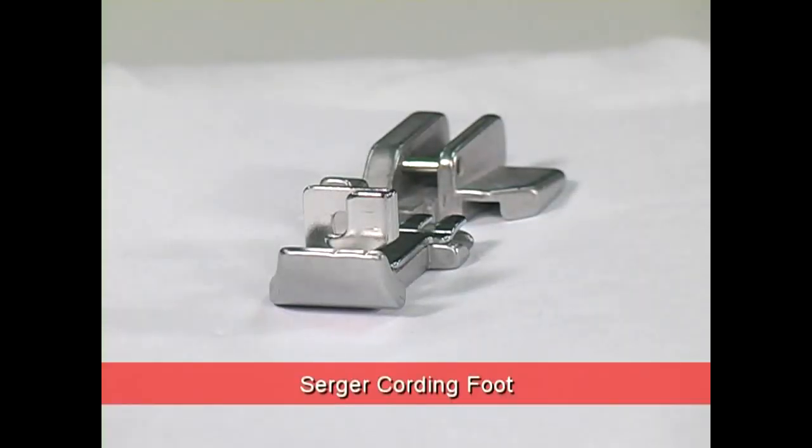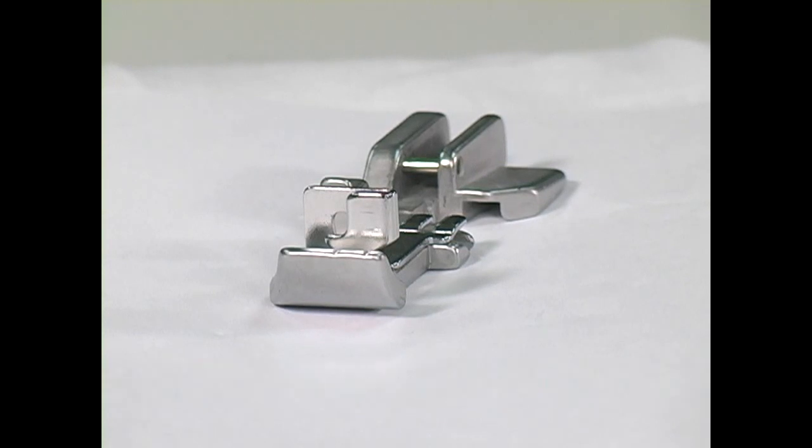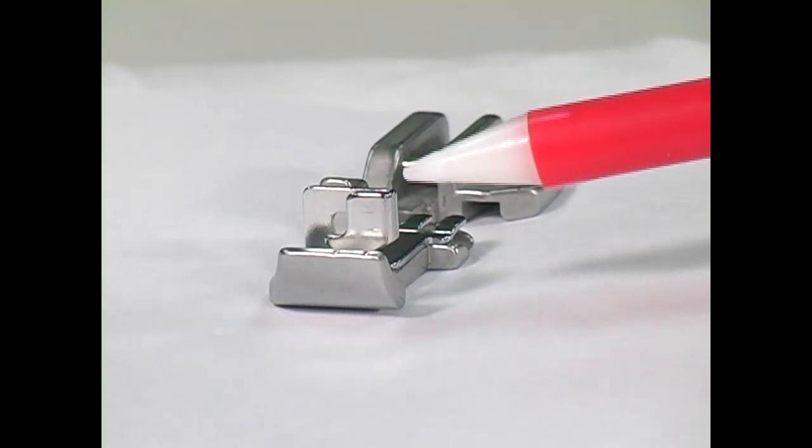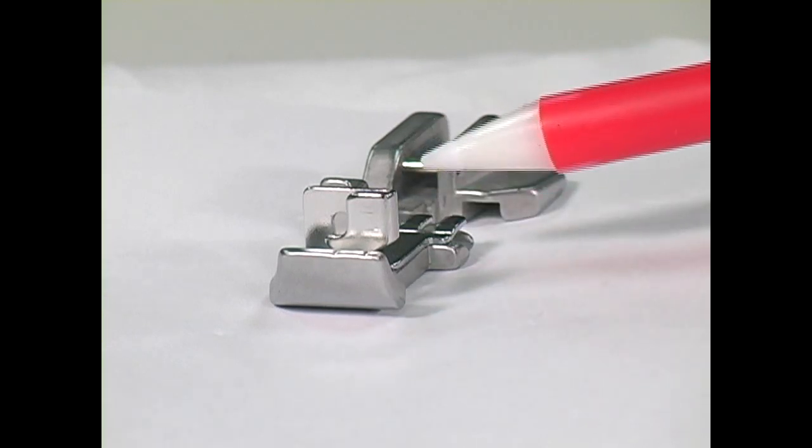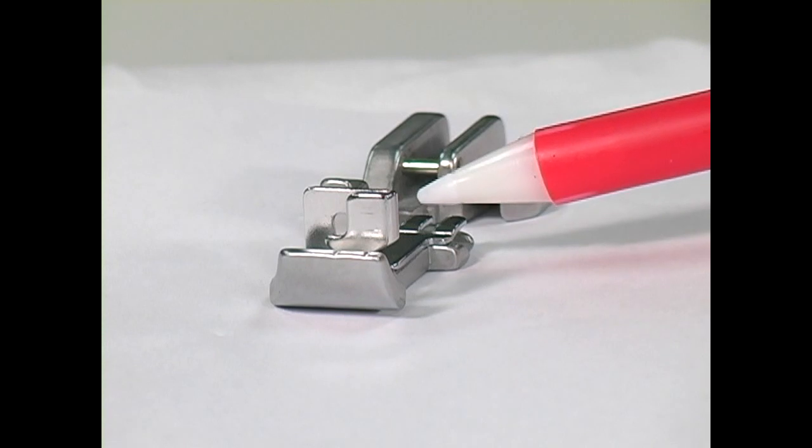The cording foot is useful for serging small cord, wire, fish line, or fine yarn into a rolled hem stitch. Attach wire to ribbon or fabric edges to create shapeable edges. The corded edge reinforces the rolled hem on a variety of fabrics. The guide in the front of the foot holds small diameter cording in place and a second U-shaped guide is located in front of the needles.